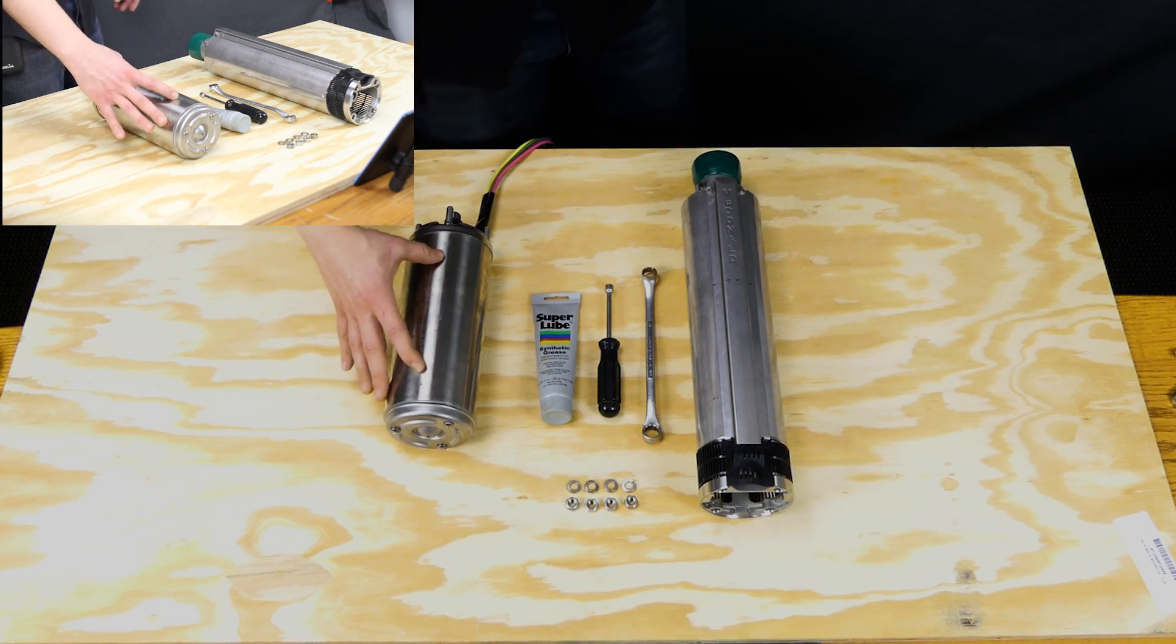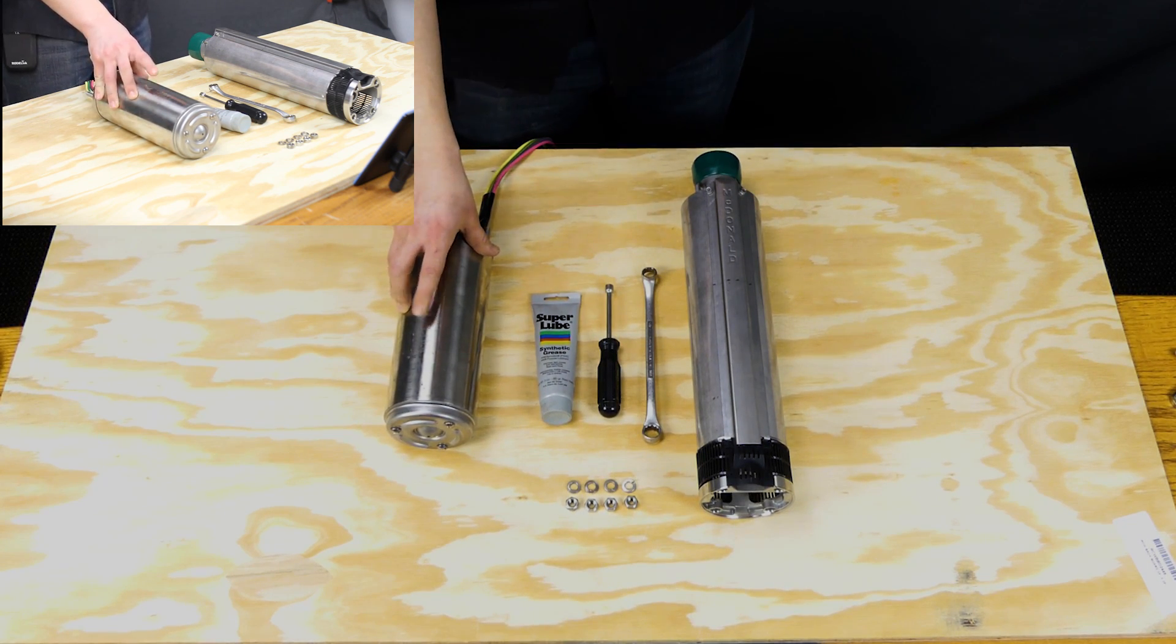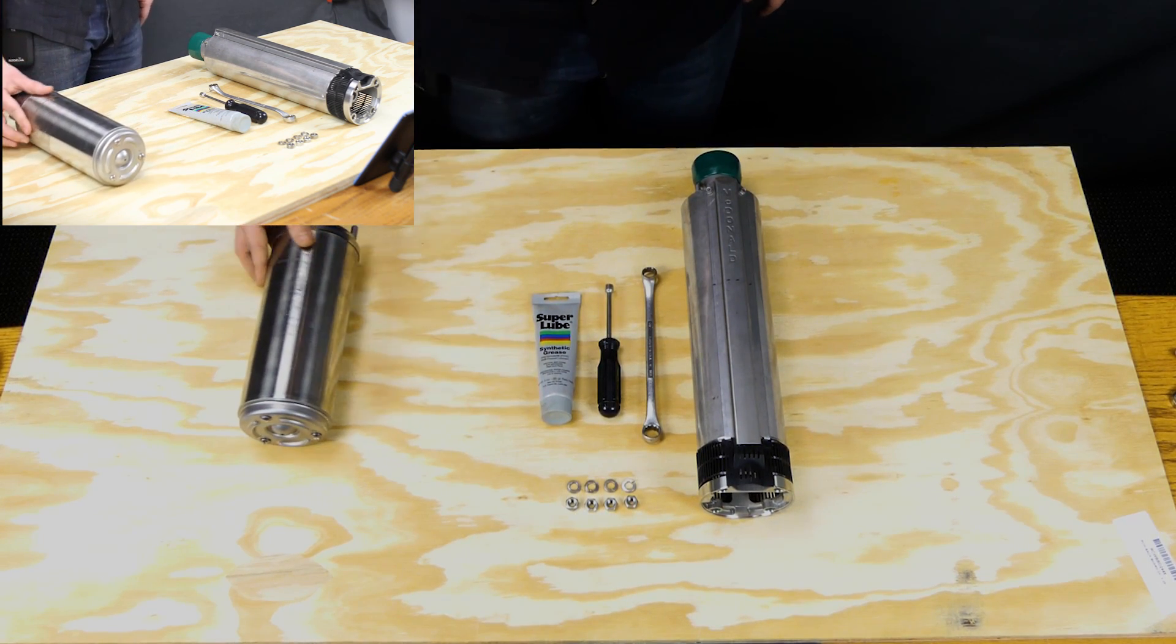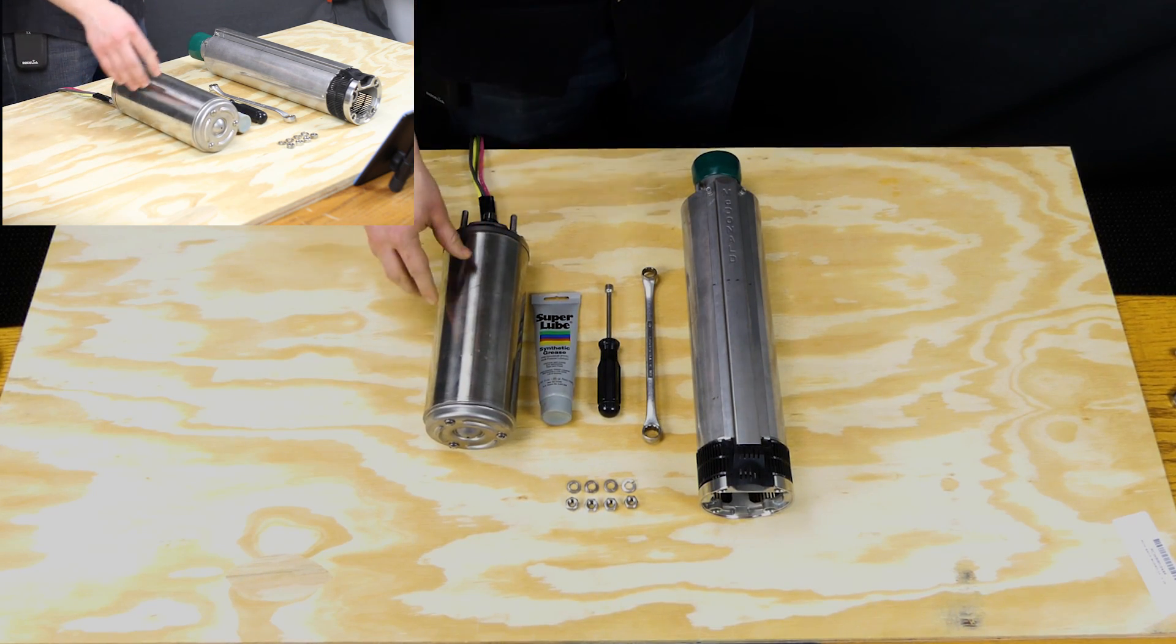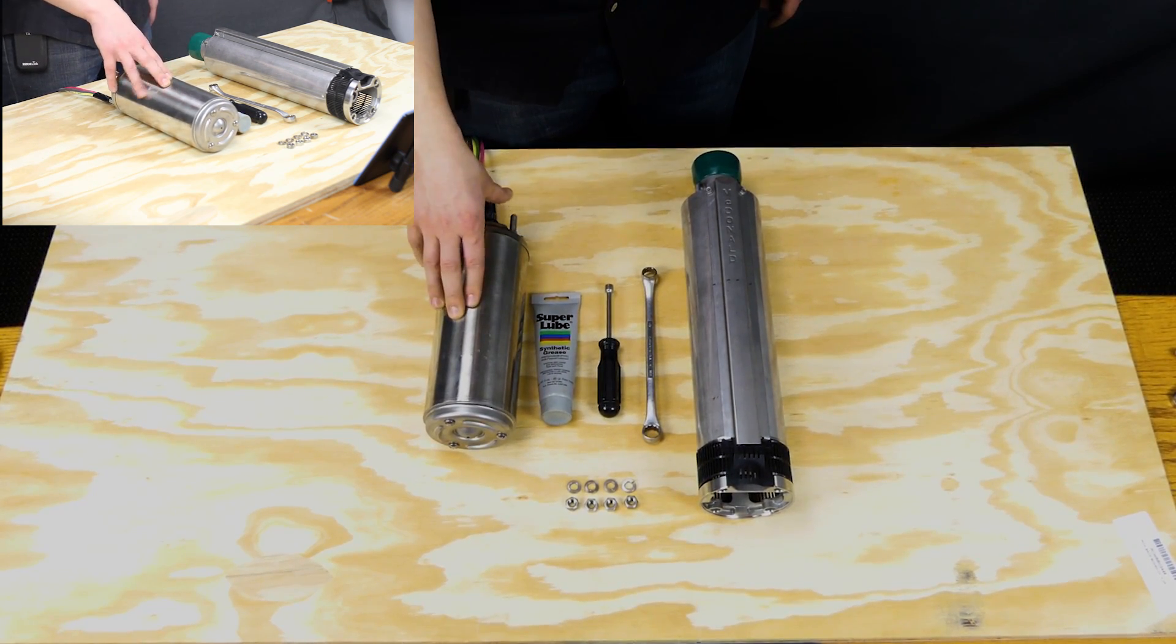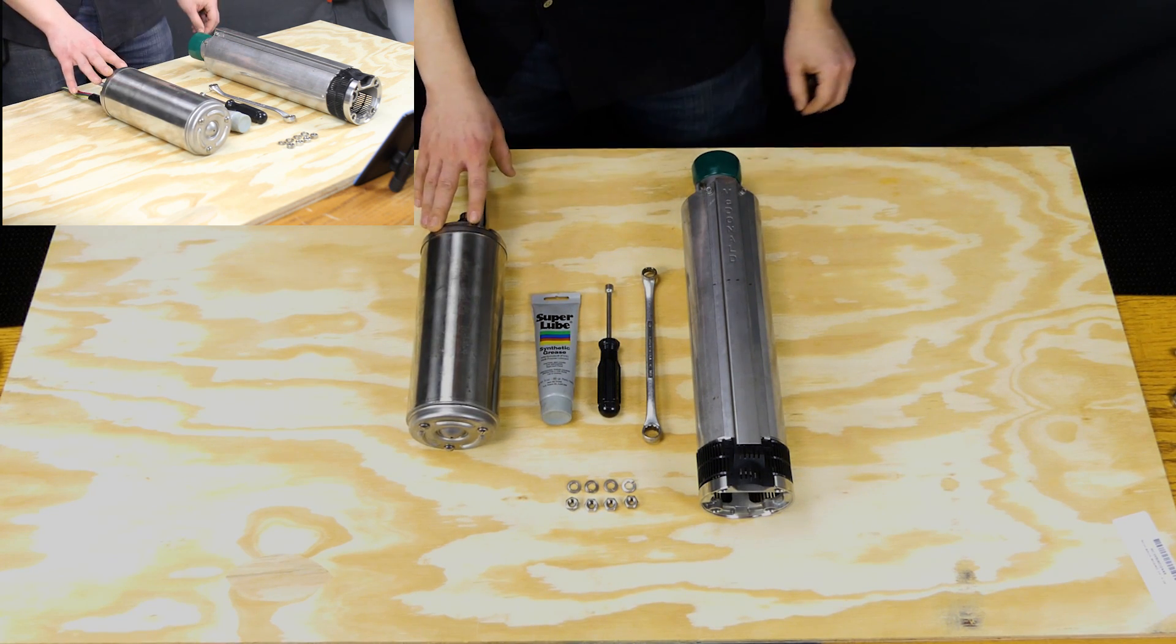But this midsection of the motor is actually quite soft and can really easily be dented. So make sure that you inspect that for any dents or dings before installing because that can have a direct impact on the motor winding.